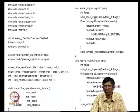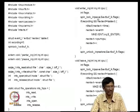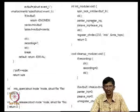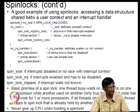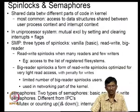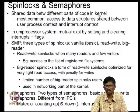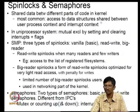Now we need to study the mechanisms available for mutual exclusion and synchronization in the kernel. There is often shared data between different parts of kernel code — some accessed in the user process context and some in interrupt context.